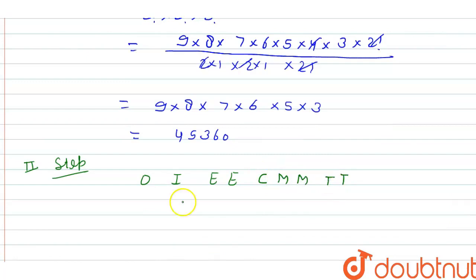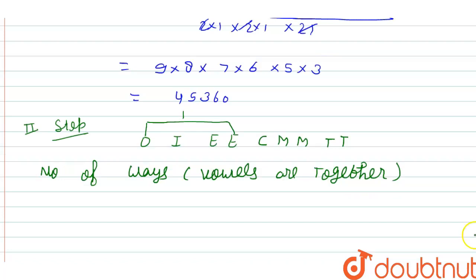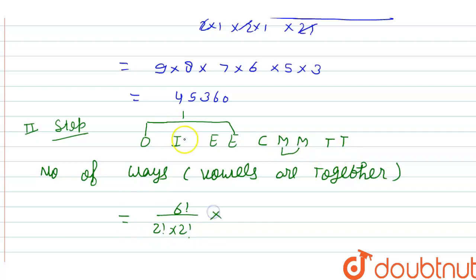When the vowels are together, treat them as a single unit. So the total number of units becomes: the 5 consonant-group letters (C, M, M, T, T) plus 1 vowel unit = 6 units total. The number of ways when vowels are together equals 6! divided by 2! × 2! (for M and T repeating), multiplied by 4! divided by 2! (to arrange the 4 vowels, where E repeats twice).